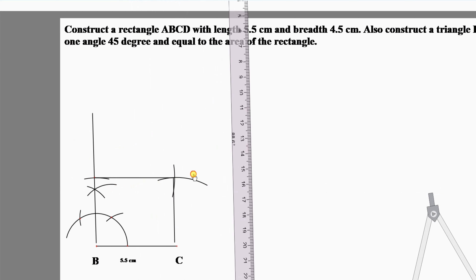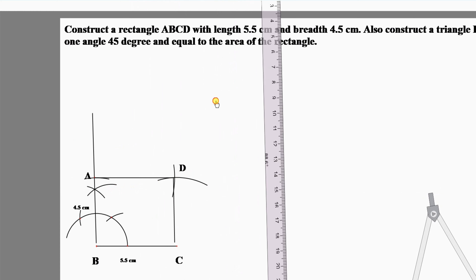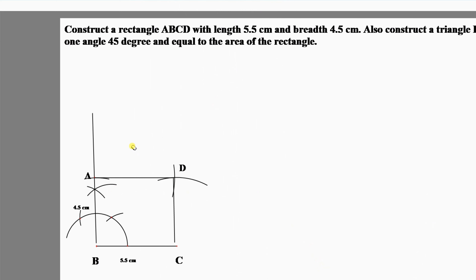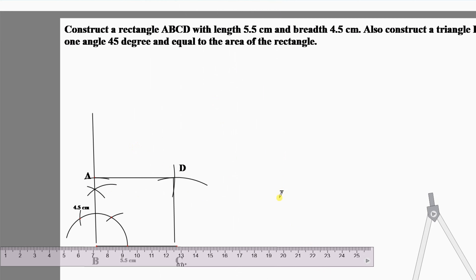Label these vertices as A and D. Now we have rectangle ABCD. After constructing rectangle ABCD, we need to construct triangle BEF whose area is equal to the rectangle ABCD. For this, make the base of the triangle double the base of the rectangle.